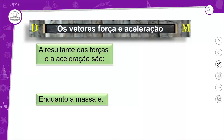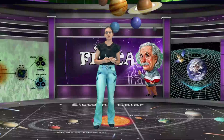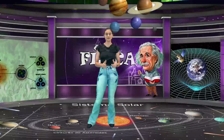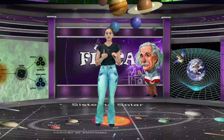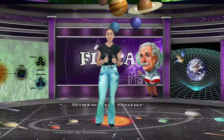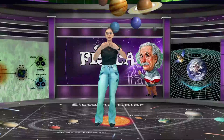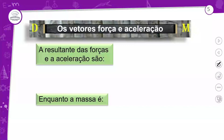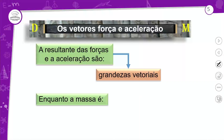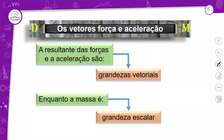Como vimos em aulas passadas, nós temos grandezas vetoriais e grandezas escalares. As grandezas escalares precisam apenas de um valor numérico para serem identificadas. Já força e aceleração são grandezas vetoriais, porque além da intensidade, eu também preciso orientá-las — ou seja, preciso da direção e do sentido. A resultante das forças e a aceleração possuem módulo, direção e sentido. Enquanto a massa é uma grandeza escalar.